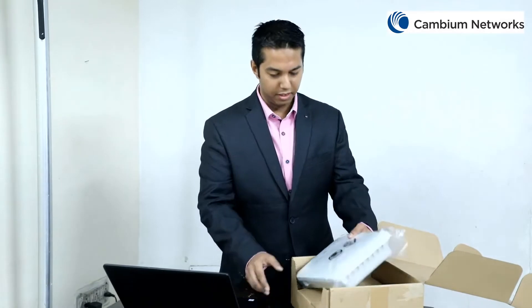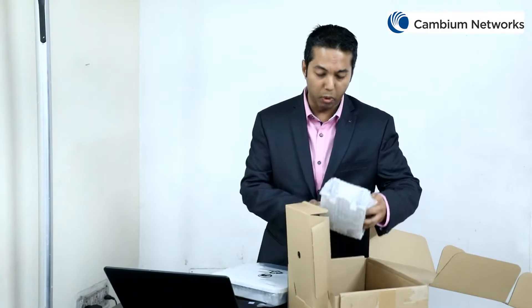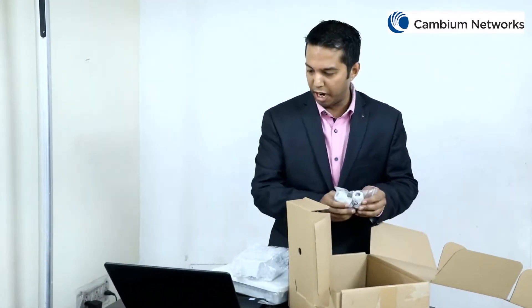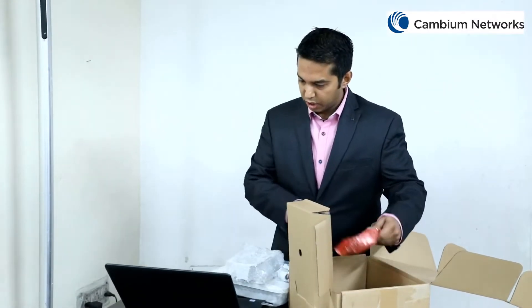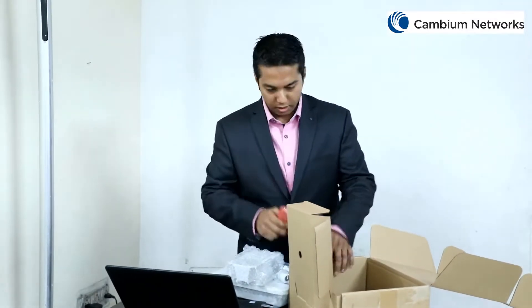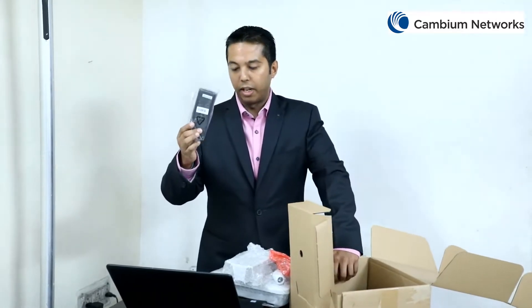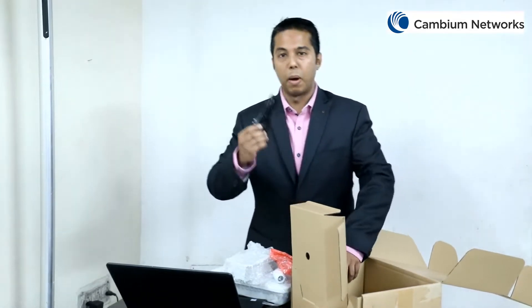This box comes with the instruction document, the access point itself, and also it comes with the wall mount mounting bracket, two IP67-grade cable glands, two hose clamps, a 30-watt 56-volt gigabit power injector, and an optional power port.